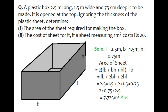The first question says a plastic box 2.5 meter long, 1.5 meter wide, and 75 centimeter deep is to be made. It is opened at the top. Ignoring the thickness of the plastic sheet, determine the area of sheet required for making the box and the cost of the sheet if the sheet is costing rupees 20 per meter square.